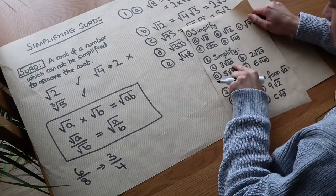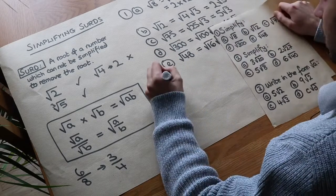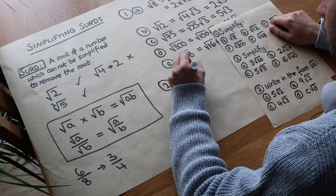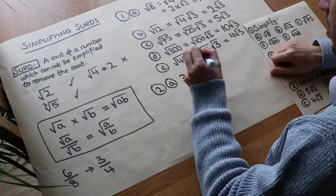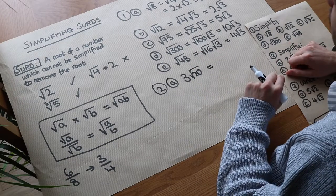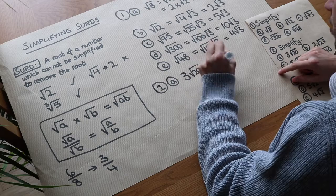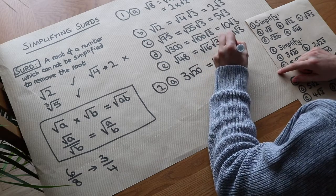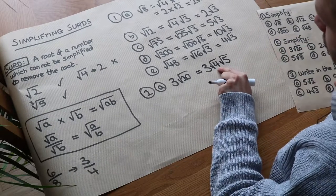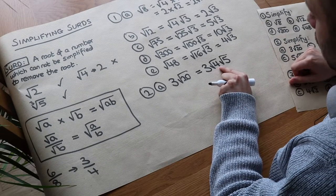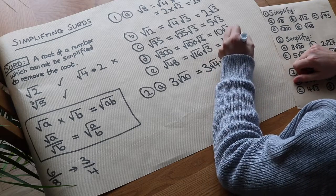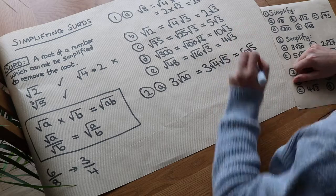Now onto these next ones — the difference is that we've got a number in front of the surd. So what do we do? With 3 root 20, what's the biggest square number that goes into 20? It's 4. So we write that as 3 times root 4 times root 5. The square root of 4 is 2, but we're multiplying it by the 3, so 3 times 2 is 6, and we get 6 root 5.